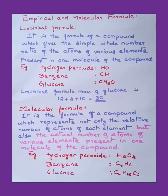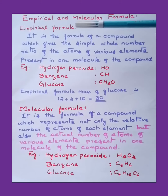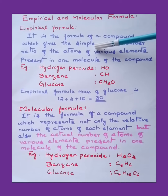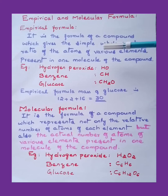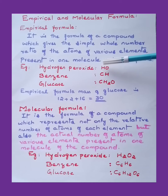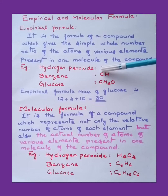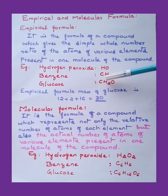Now let us move to another important concept: empirical and molecular formula. Empirical formula is the formula of a compound which gives the simplest whole number ratio of the atoms of various elements present in one molecule. For example, hydrogen peroxide has H and O in a 1:1 ratio; benzene has C and H in a 1:1 ratio.